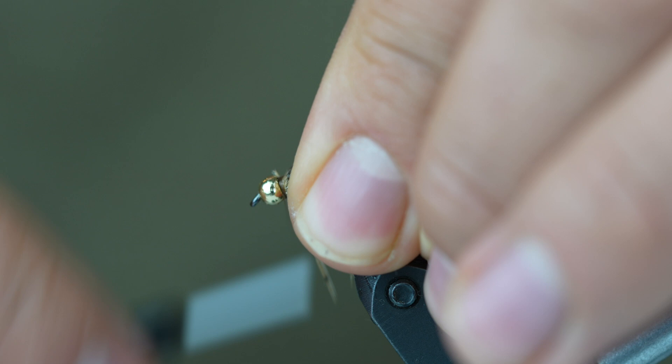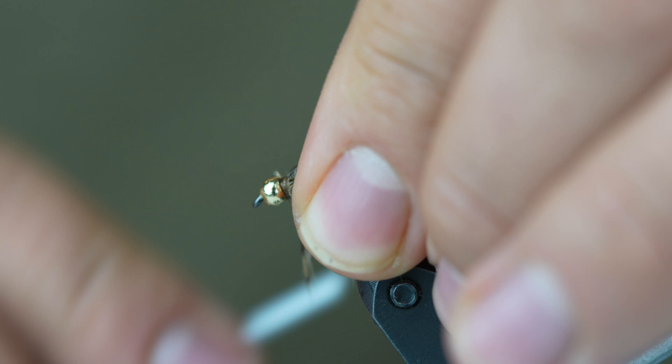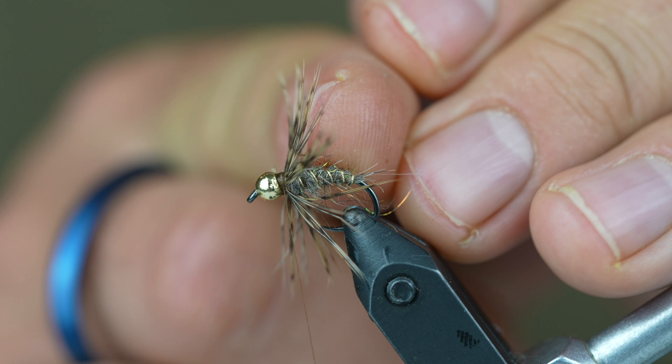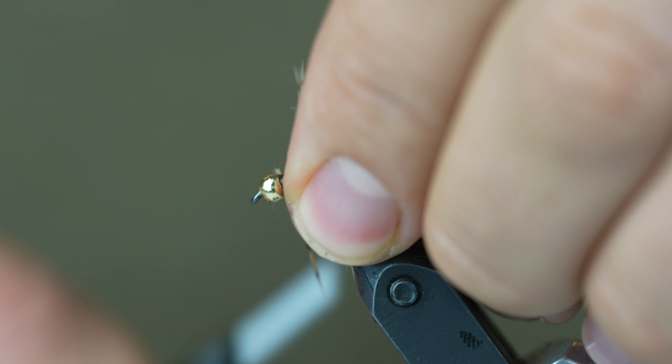So you just want to take a few wraps back. I'm going to build up this thorax a little bit and just wrap back until you get over that stem and you've reinforced it a little bit. That's part of the reason why we built up that little thorax back here, because that helps keep those feathers splayed out instead of them basically getting tied down flat against the body of the fly.